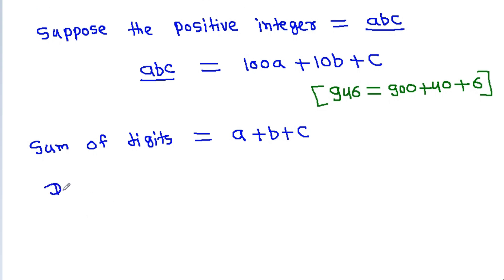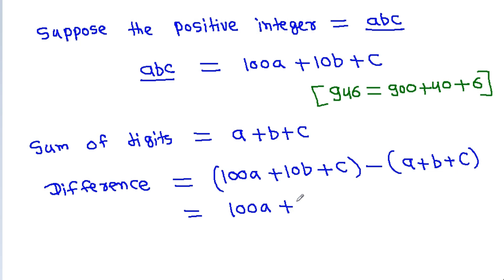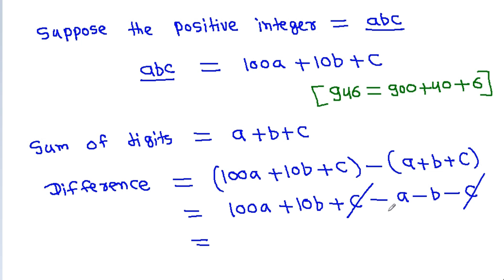So the difference will be equal to 100a plus 10b plus c, minus (a plus b plus c). This gives 100a plus 10b plus c minus a minus b minus c. The c terms cancel, 100a minus a gives 99a, and 10b minus b gives 9b. So the difference equals 9 times (11a plus b).